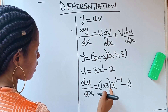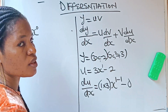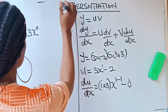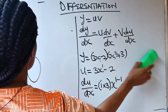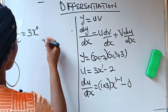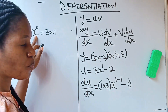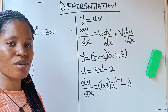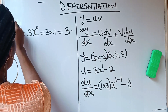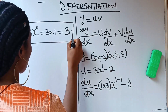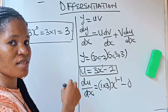So du/dx equals 1 times 3, which gives us 3. We have x raised to the power of 1 minus 1, which gives x to the power of 0. Now, x raised to the power of 0 is 1 — anything raised to the power of 0 is 1. So it's 3 times 1, which is 3. Therefore du/dx equals 3.